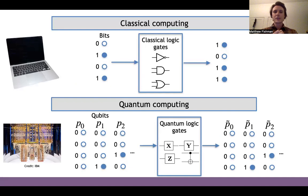Quantum computers extend this idea by using qubits, which are states of quantum systems. Qubits are like bits, except they're in superpositions of states of zero or one. Quantum computers act on these superpositions of qubits with unitary operators, which are built out of quantum logic gates such as X, Y, Z, and CNOT. And quantum computers map quantum states to other quantum states.